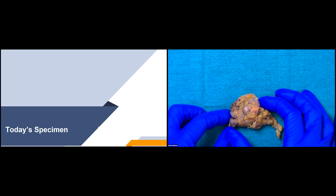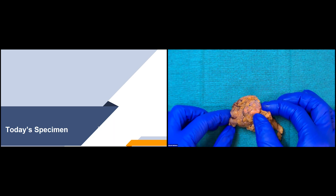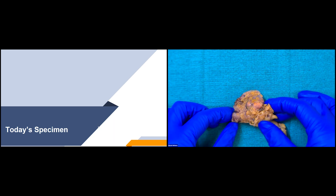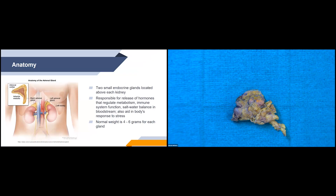So we have our adrenal gland here. You can see it with that yellowy appearance. And all of this fat attached to it is the periadrenal soft tissue. The adrenal glands are two small endocrine glands located above each kidney. They are responsible for the release of hormones that regulate metabolism, immune system function, salt-water balance in the bloodstream, and aid in the body's response to stress. The normal weight per gland is about four to six grams.